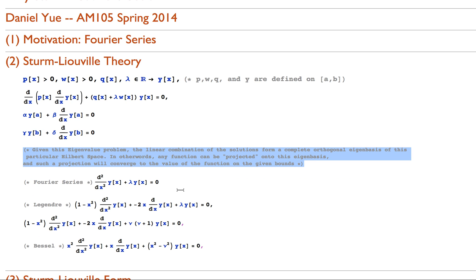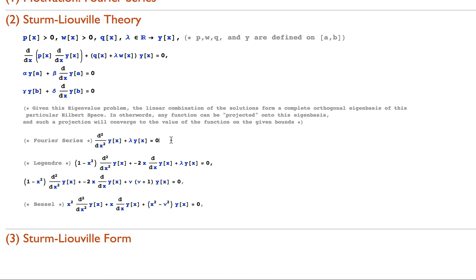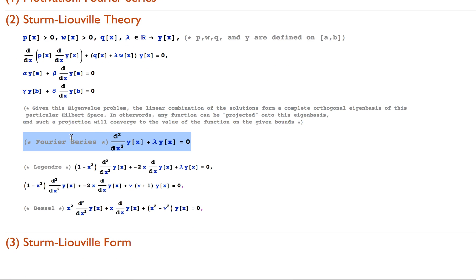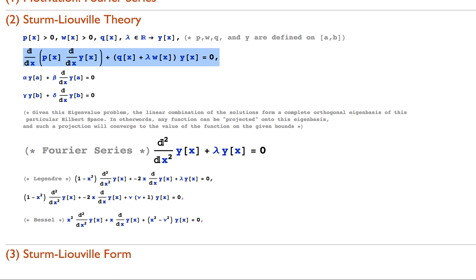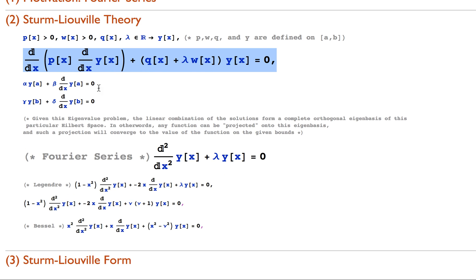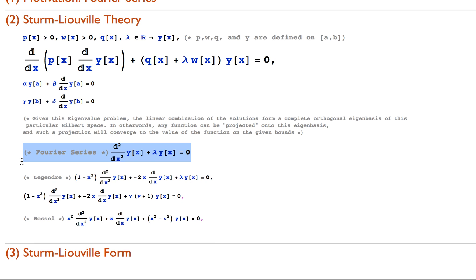I'm going to rewrite Fourier series here just to show you that it's in Sturm-Liouville form. If we go ahead and compare this Sturm-Liouville form, we see that p of x has to be 1 here, and that would just give a second derivative from this term, q is 0 and w of x is 1. Given that, this is the exact form for Sturm-Liouville form.